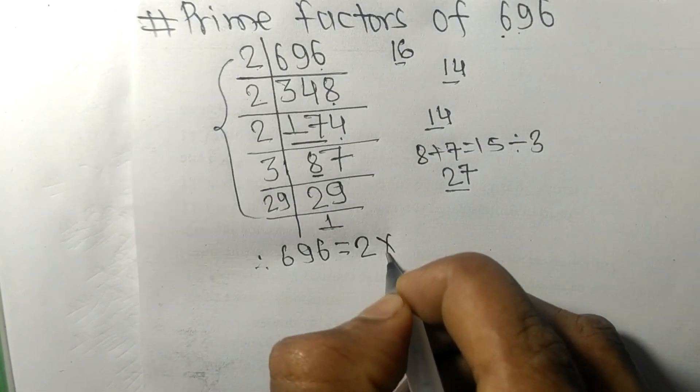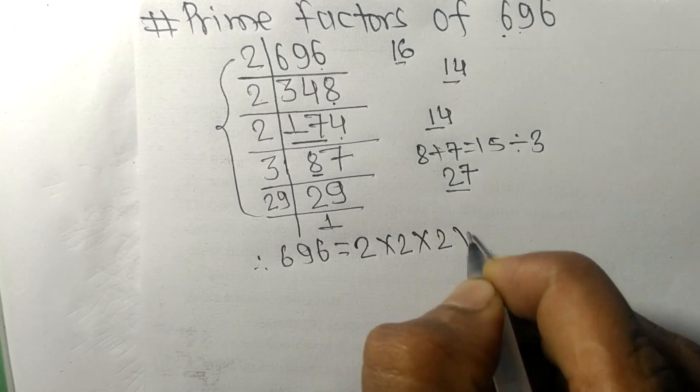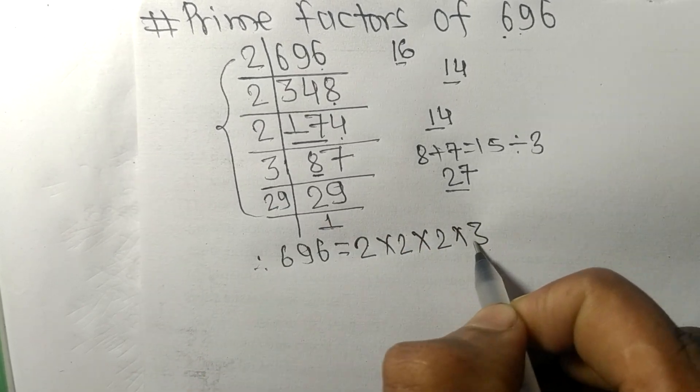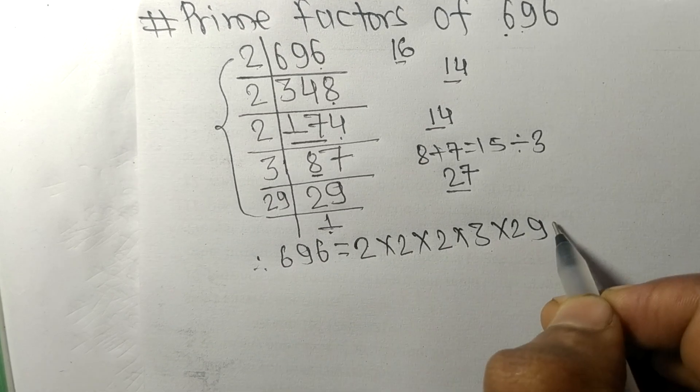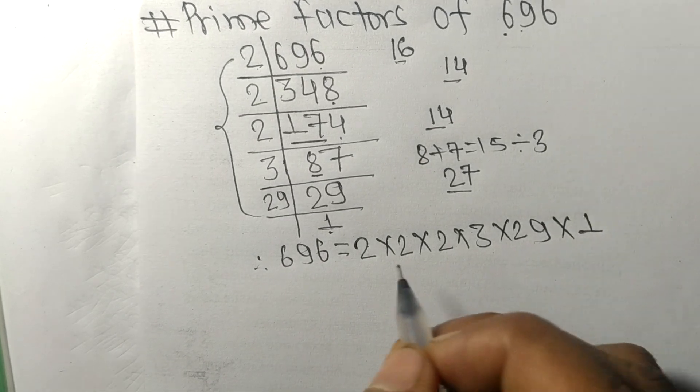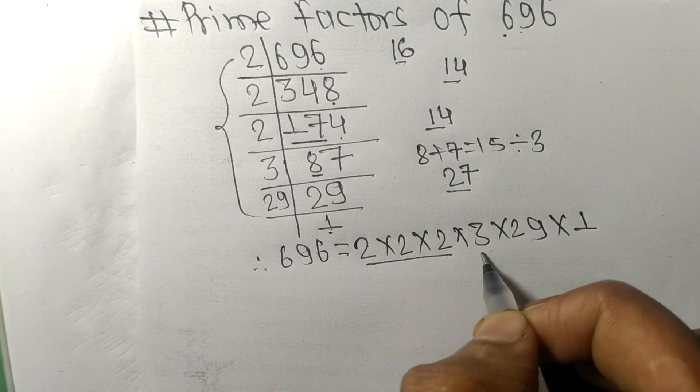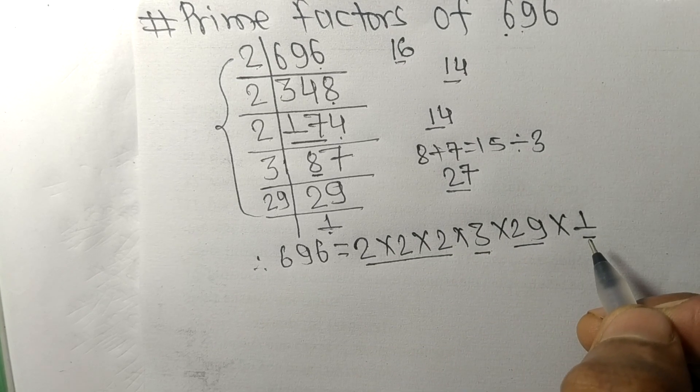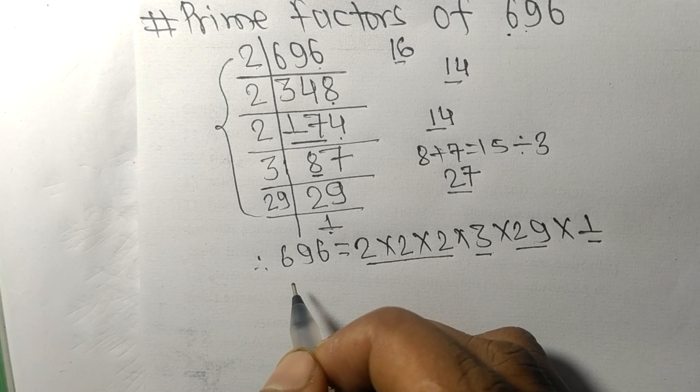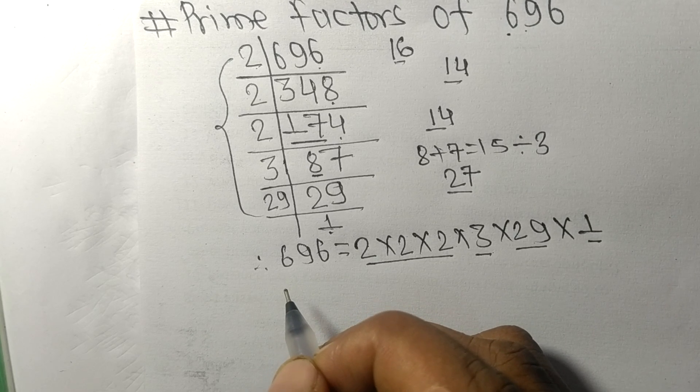2 to the power 3, times 3, times 29. So these 2, 3, 29, and 1 are the prime factors of 696.